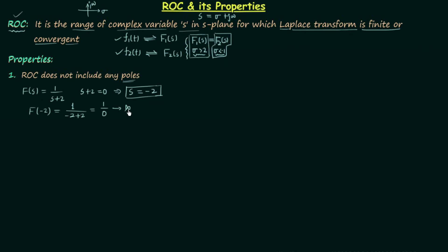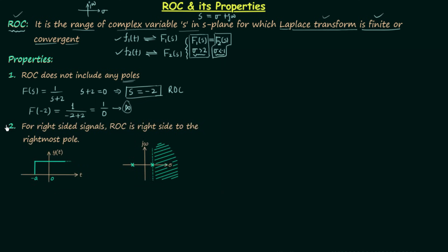1/0 is undefined — it approaches infinity. But according to the definition of ROC, ROC is the range of complex variable s in which the Laplace transform is finite. If s equals minus 2 were included in the ROC, the Laplace transform should be finite there, but we get infinity instead. This means we cannot include poles in the ROC.